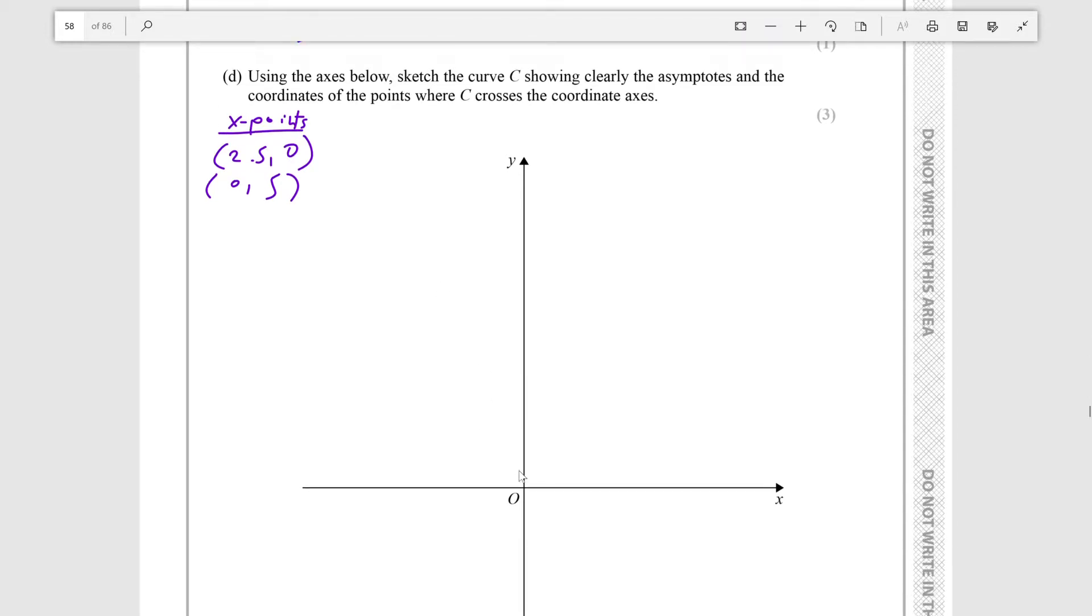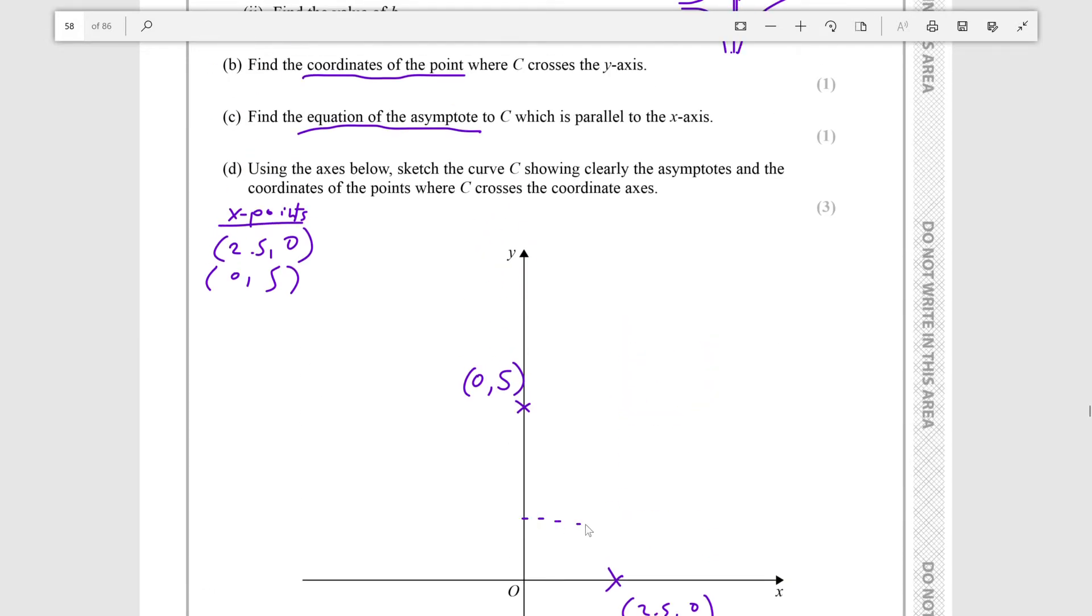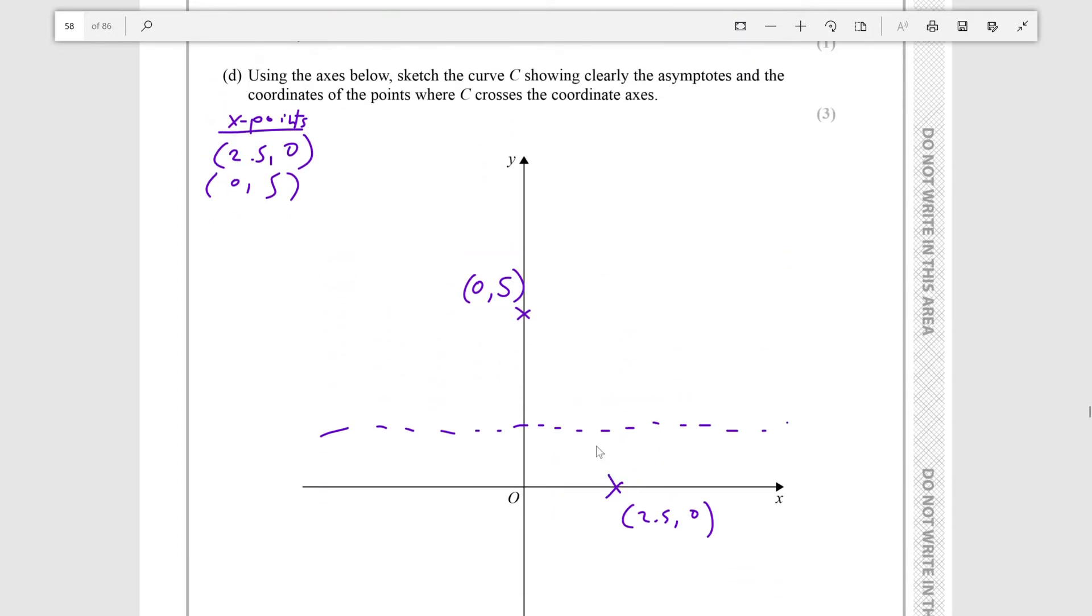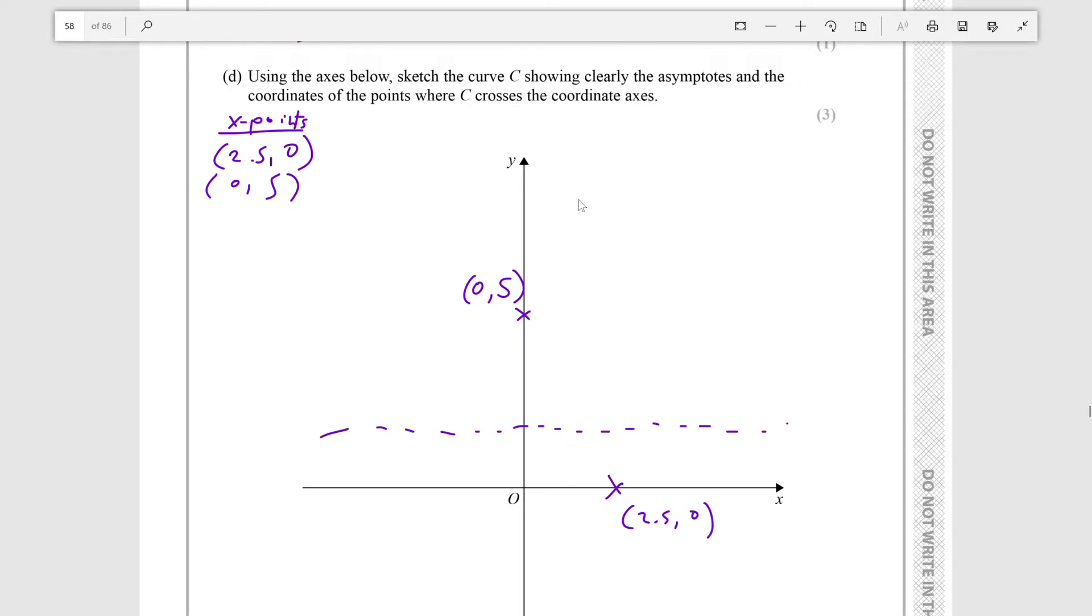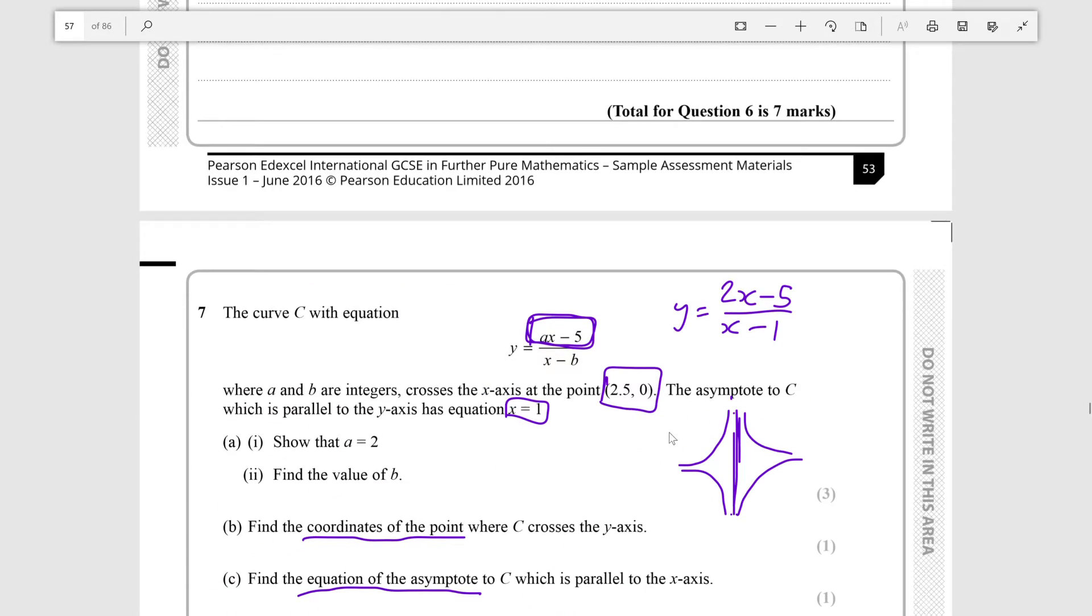Using axes below, sketch the curve C, showing clearly the asymptotes and the coordinates of the points where C crosses the coordinate axes. Let's say this is 1, 2, 3, 4, 5. And it crosses here at (0, 5). And then maybe this is half the distance. So it crosses here at (2.5, 0). And then we know that it has an asymptote at y equals 2. So let's just draw a line here. And on top of that, it has an asymptote at x equals 1. So we draw this vertical line here.